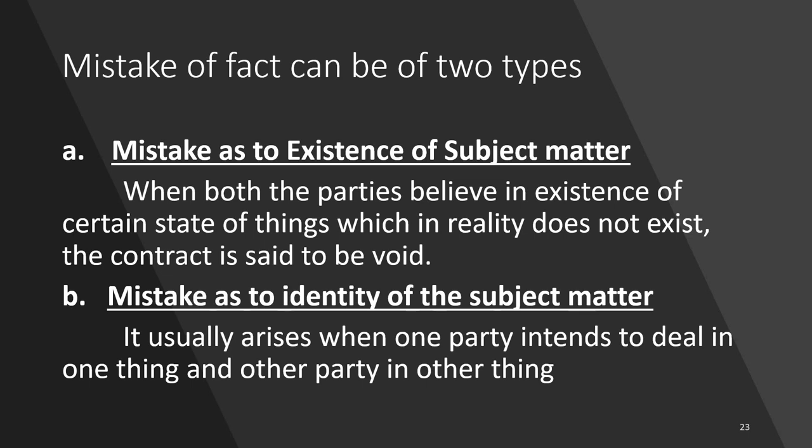Mistake of fact is of two types. First, mistake as to existence of subject matter: when both parties believe in the existence of a certain state of things which in reality does not exist, the contract is void. For example, if I agree to sell you my house in Mumbai but both of us are unaware that it was destroyed by an earthquake, the subject matter doesn't exist and the contract is void.